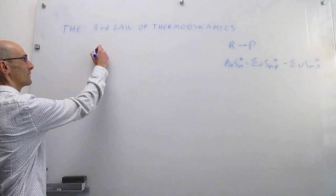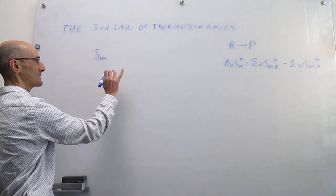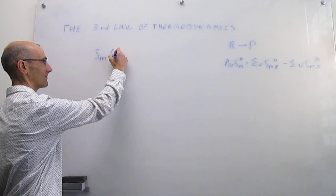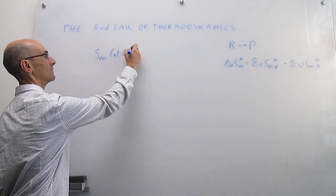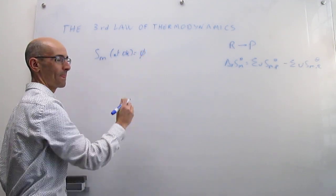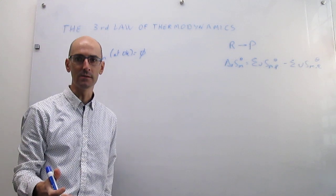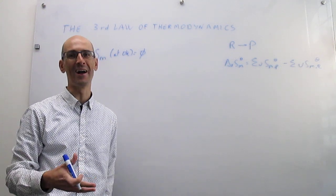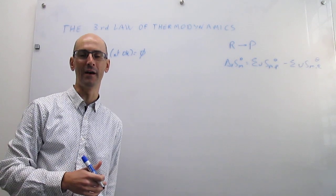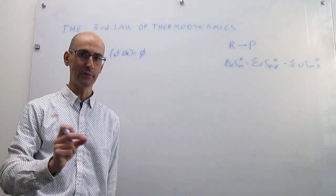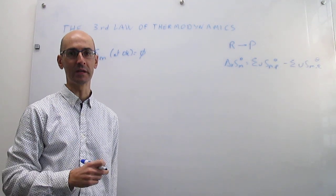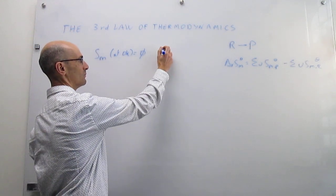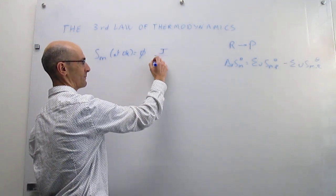It's very simple. The molar entropy for any substance that is perfectly pure and crystalline at zero Kelvin is equal to zero. This would not apply to things that are mixtures, and it would not apply to things that are amorphous — so they don't have perfect crystals. But if you have a perfectly crystalline substance at zero Kelvin, then the absolute molar entropy will be zero joules per mole per Kelvin.